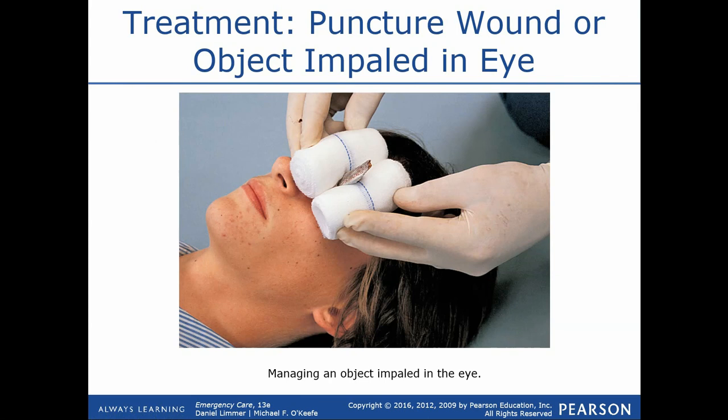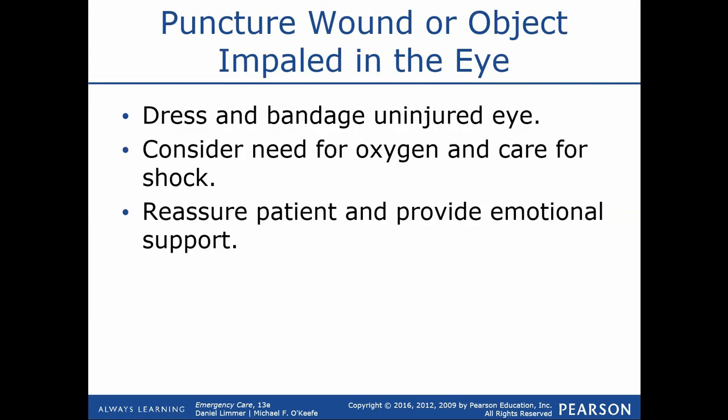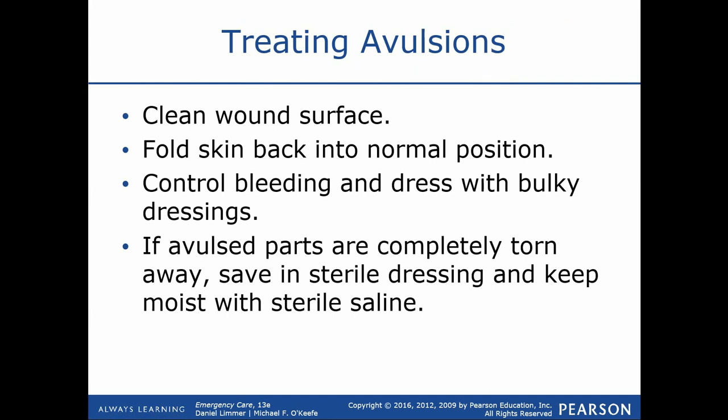Here's an example of an object impaled into the eye. Not only do we need to stabilize the object, but we also cover the opposing eye — remember that both eyes work in tandem. If the left eye moves, the right eye does the same thing, so if one eye is injured and the other eye is moving around, the injured eye is doing the same. We want to cover both eyes to prevent any stimulation or unnecessary movement. A cup placed over the impaled eye would certainly work as well.